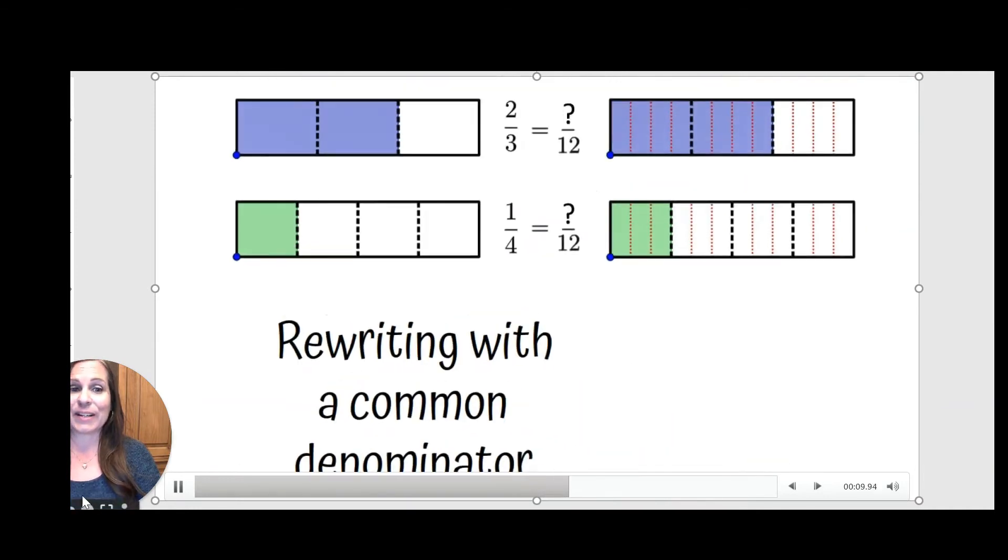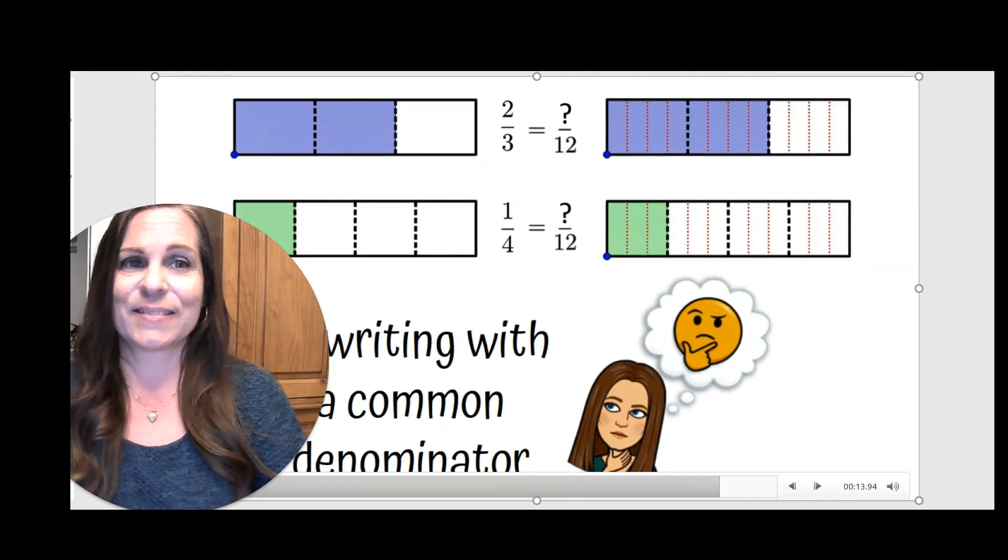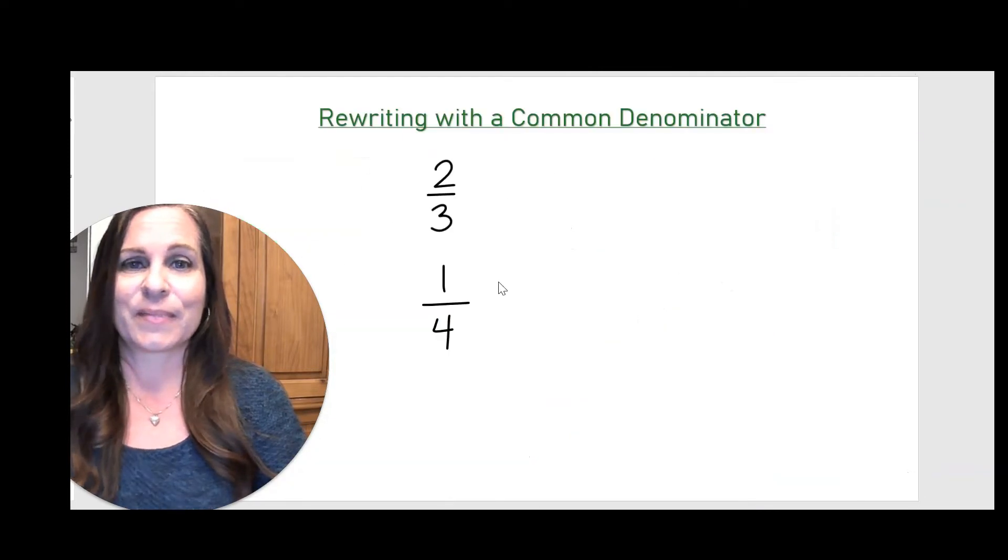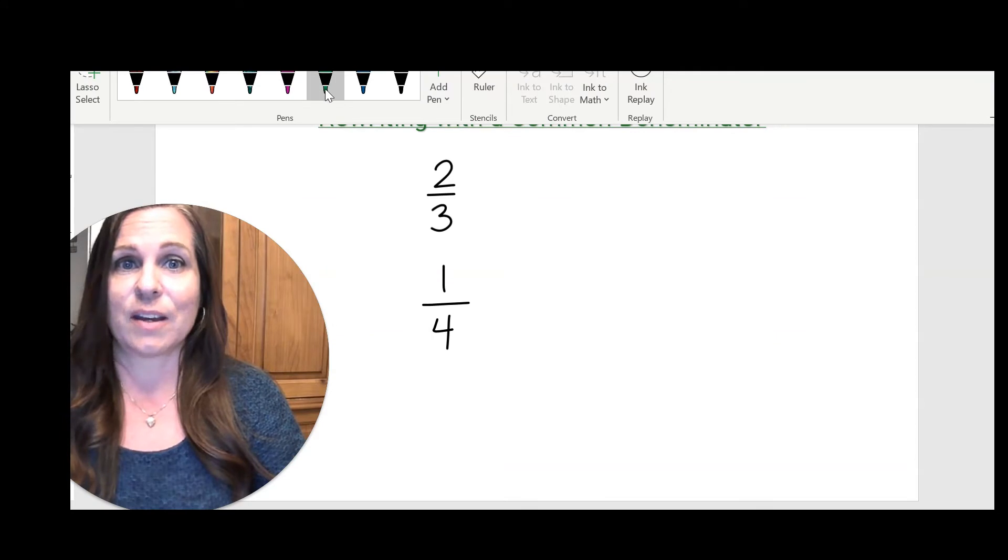Rewriting with a Common Denominator. Let's look at the fractions two-thirds and one-fourth. If I wanted to add or subtract these fractions, I would first need to find a common denominator.